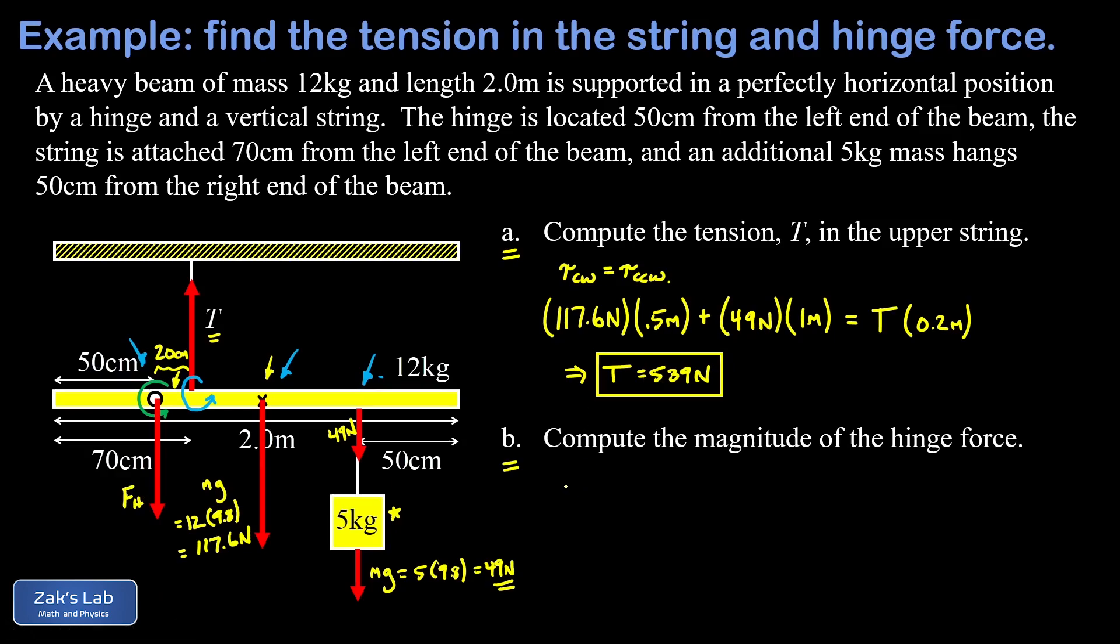Now to get the hinge force probably the simplest way to do it is to just look at the sum of all the forces in the y direction and that must be zero. It's totally equivalent to say the sum of all the forces pointing up better be equal to the sum of all the forces pointing down. So F up equals F down. We only have one upward force that's the tension and then we have three downward forces: the hinge force, the force of gravity pulling down on the beam itself, mg, and then the force of gravity pulling down on the five kilogram hanging mass.